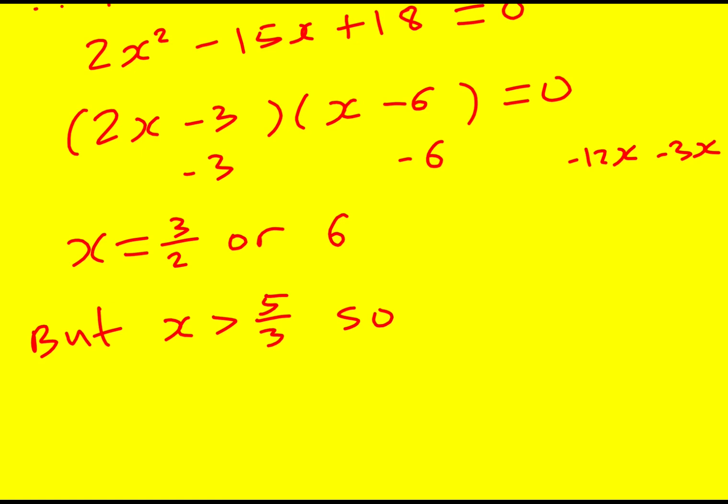So actually that is this is one and a half this is one and two thirds this one's too small. So we need to reject 3 over 2. The only answer is going to be x equals 6.